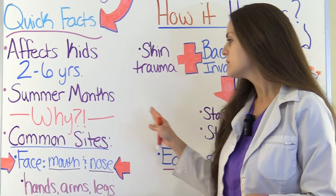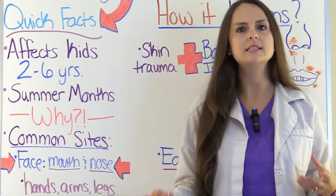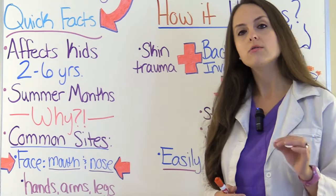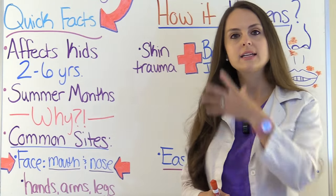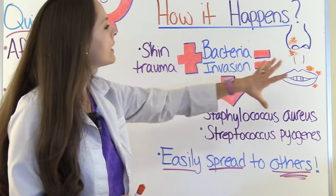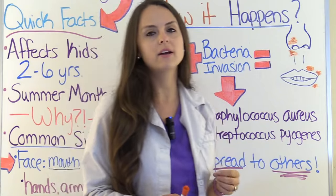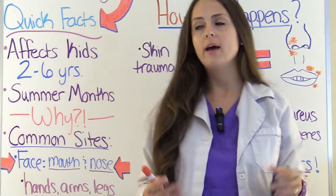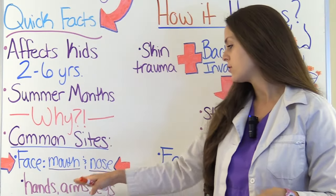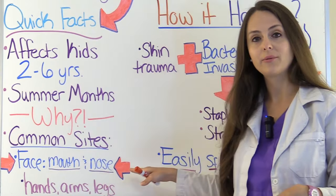What are some common sites of Impetigo? Where are you really going to see this on the pediatric patient? The most common site is the face — you're likely going to see it around the mouth and the nose area. However a patient can have it on their hands, arms, and legs, but you're most likely to find it on the face.